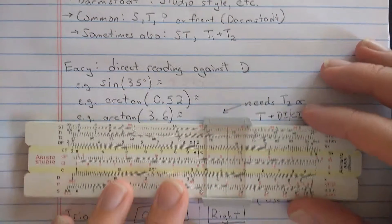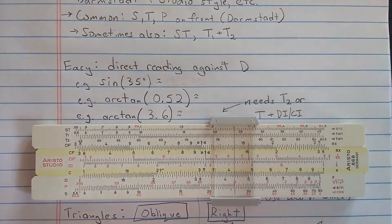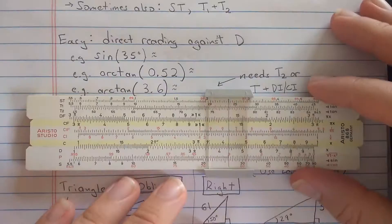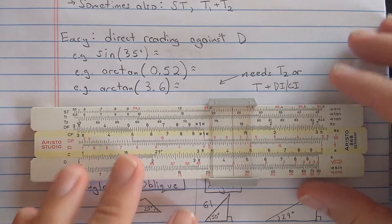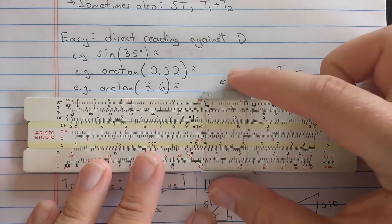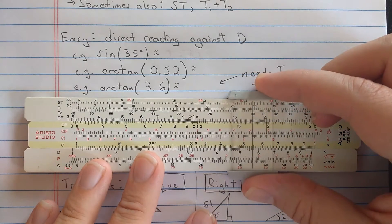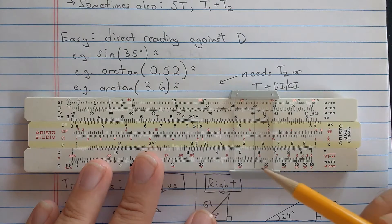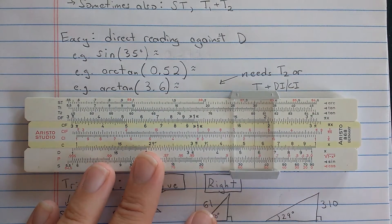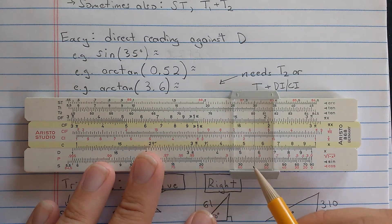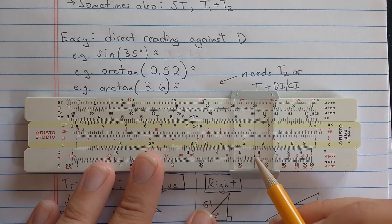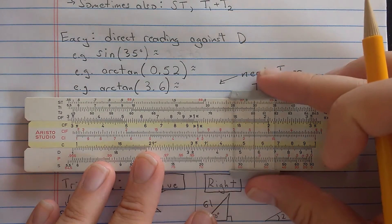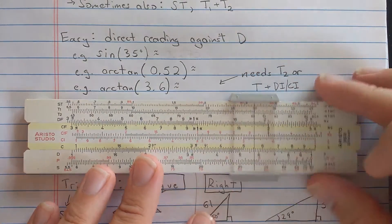Now, with this type of layout, it's easy to do direct reading. So you would direct read against D. So say you want to compute sine of 35 degrees. S scale is on the bottom. You simply find 35 degrees, and then you read on the D scale about 5.67572, about.